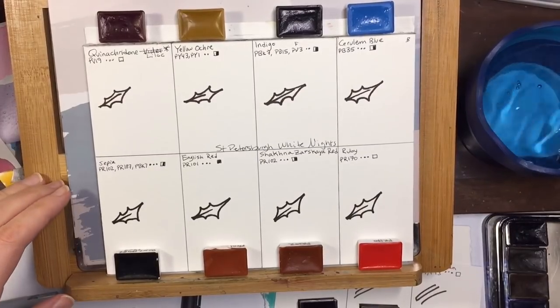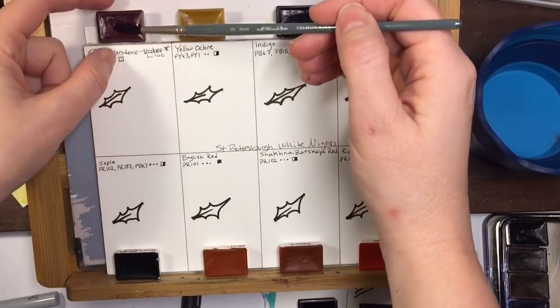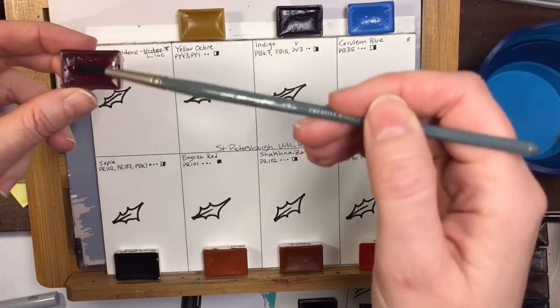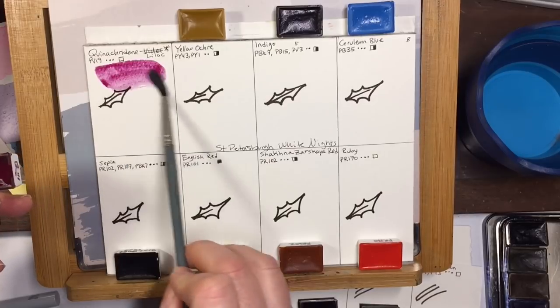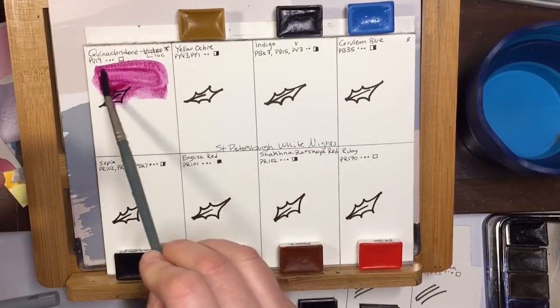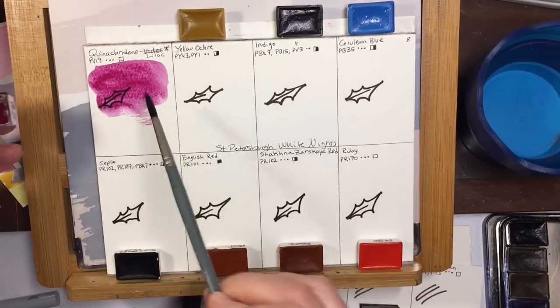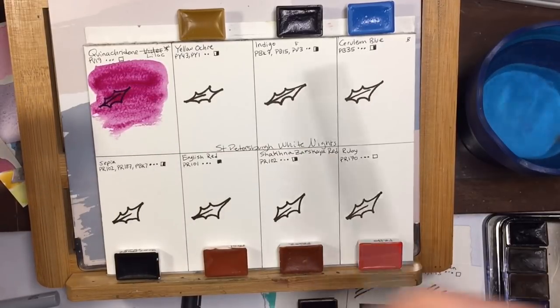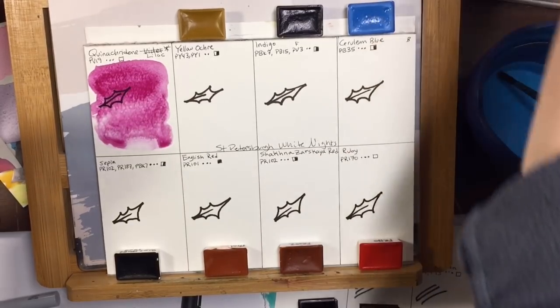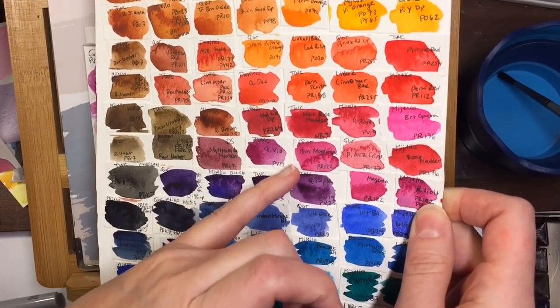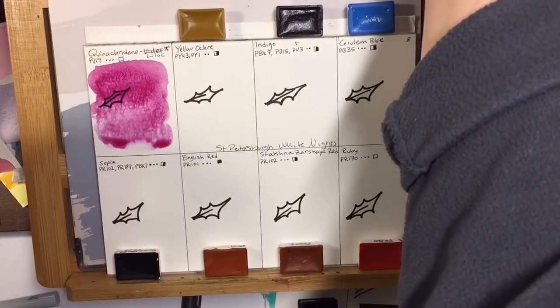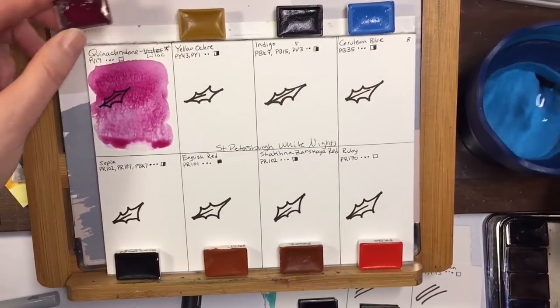Okay, so here we go. I'm going to swatch them out and this is actually lilac. There is a quadacridone violet that they sell also. This is a PV19. It's very comparable with any other PV19 that you see out there. Another one that comes to mind is Turner Watercolors Quinviolet and it's PV19 also. It's a beautiful color.